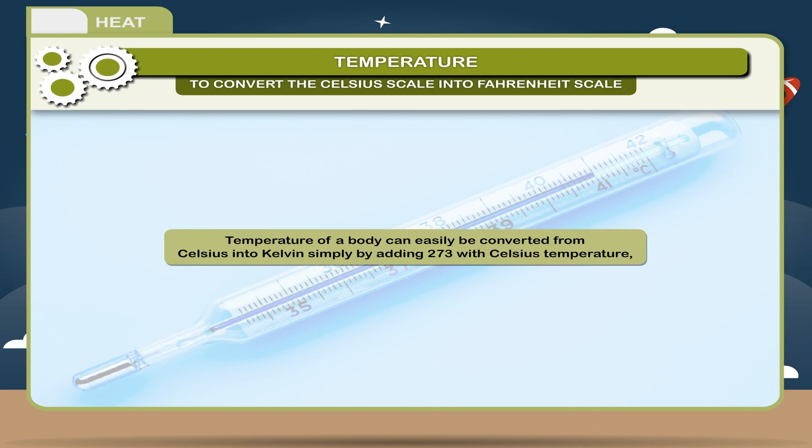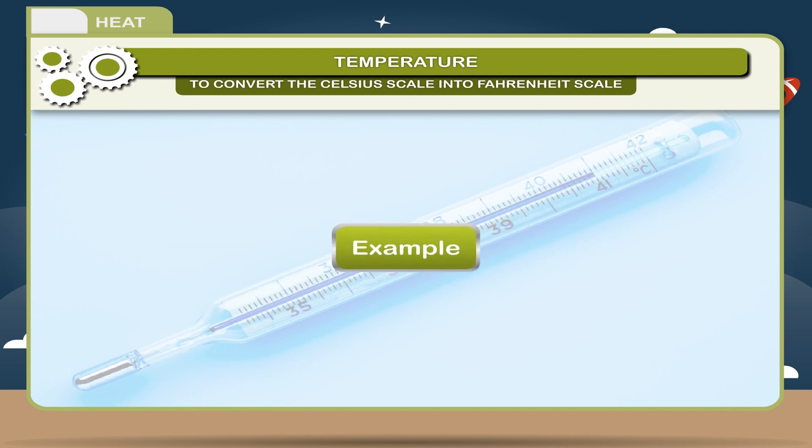simply by adding 273 to the Celsius temperature. Example: 100°C = 100 + 273 = 373 K.